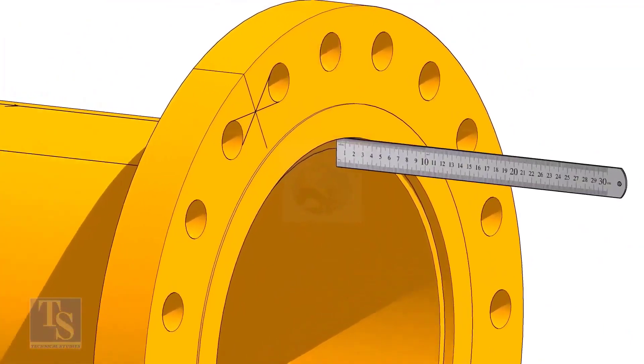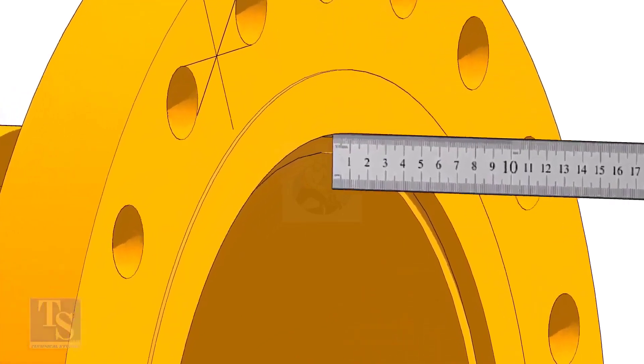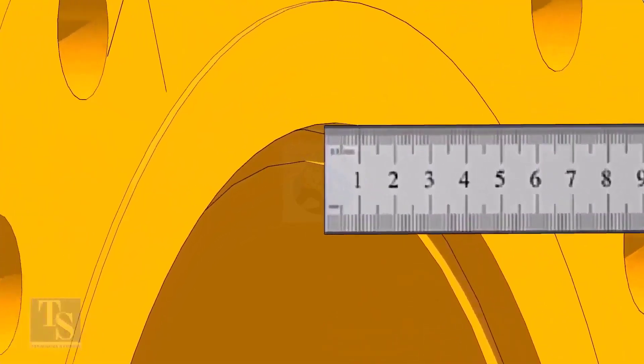Fix the distance between the flange face and the pipe face, usually this measurement is equal to the thickness of the pipe.